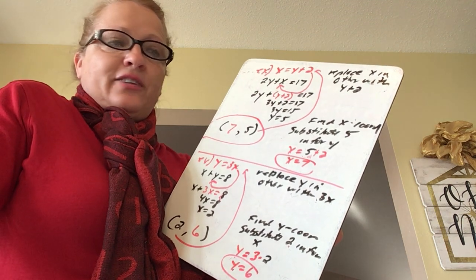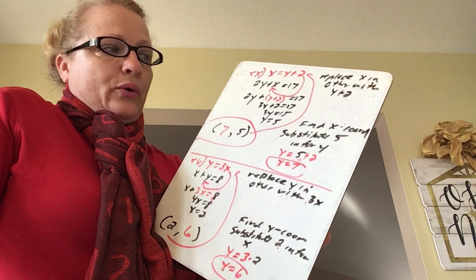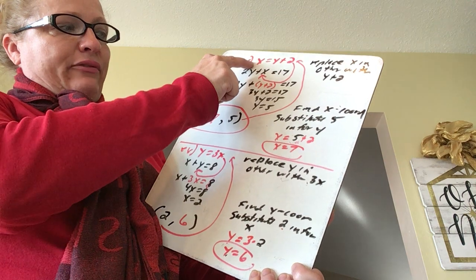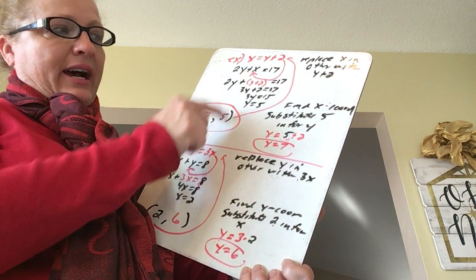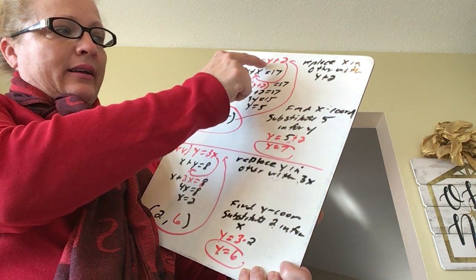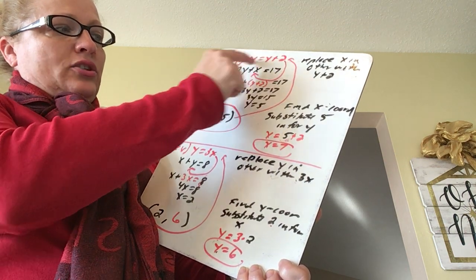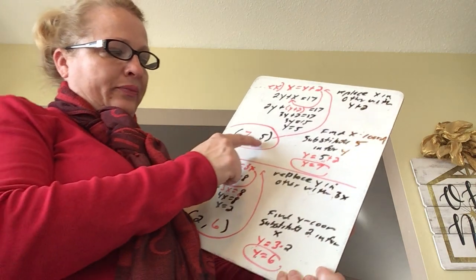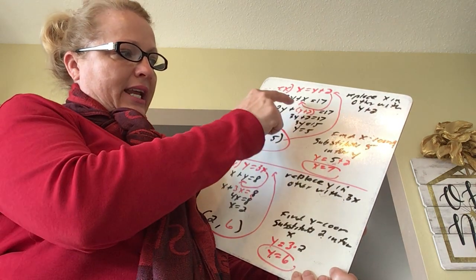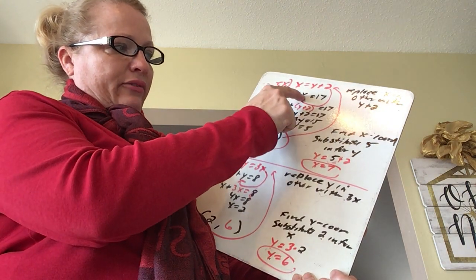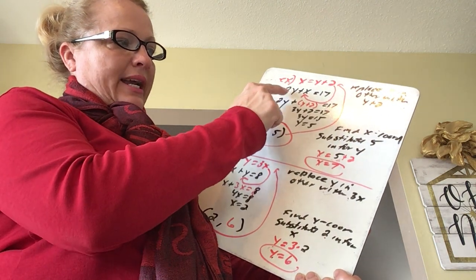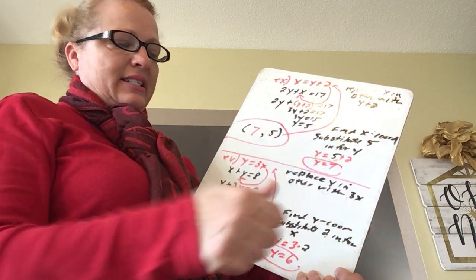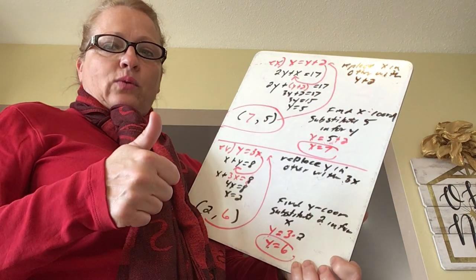This is an answer that works in both equations. Let's check it. If I put in 7 for x and 5 for y: 5 plus 2 is 7, so 7 equals 7 — that's true. And if I put in 7 for x and 5 for y in the second equation: 2 times 5 plus 7 gives 10 plus 7, which is 17. That works.